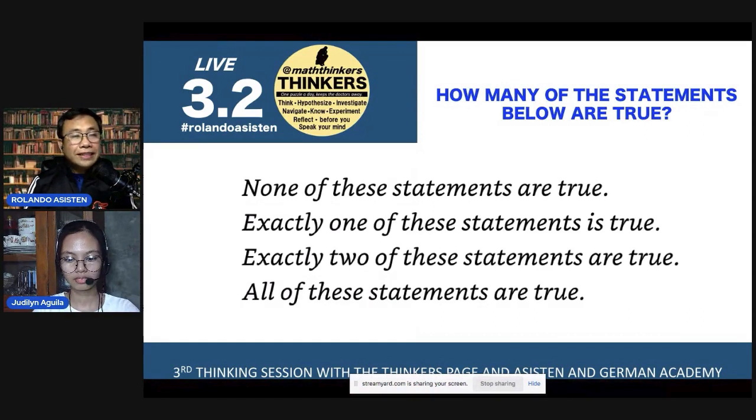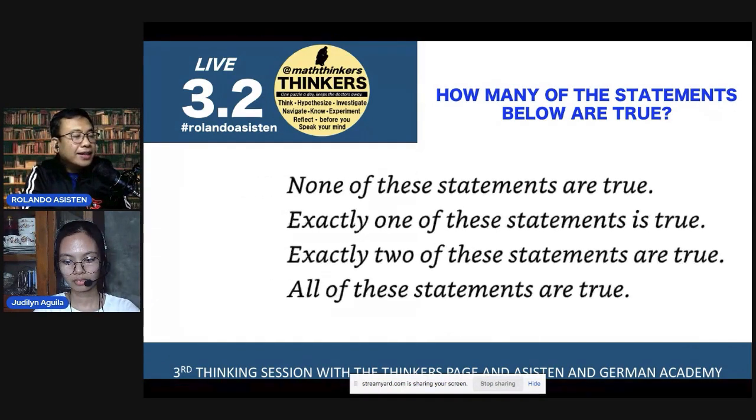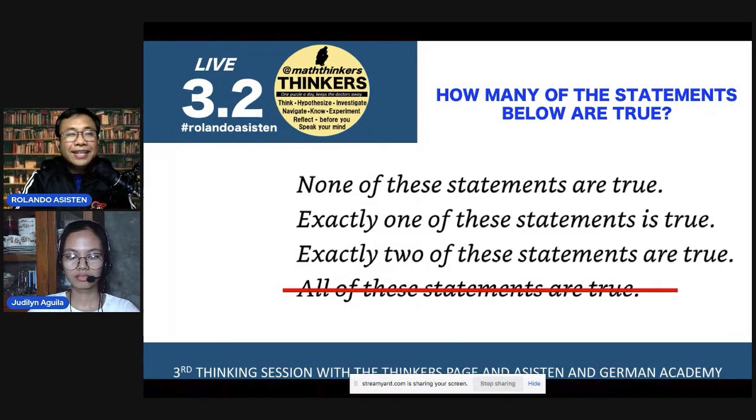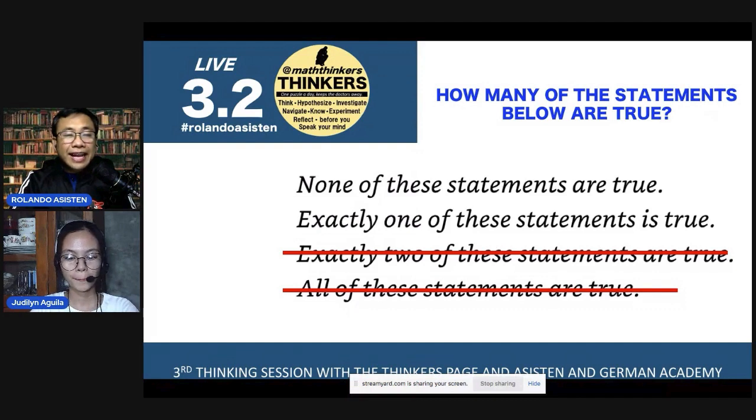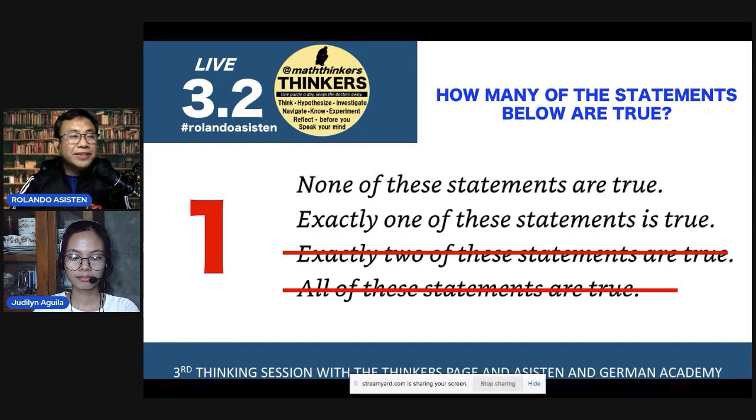So first, since these are all conflicting statements, then the last statement, all statements are true, must be wrong because not all of them can be true. We cannot say that none is true and exactly one is true and exactly two are true and still say that all the statements are true. So we can strike out the last statement. Now, which one can we still eliminate? Is it possible to say that none of the statements are true and at the same time, exactly one of these statements are true? That's impossible. So this statement, exactly two of the statements are true, cannot be also correct because you cannot have two correct statements here when the statements are all conflicting. So we can remove this part. Next, it's possible that none of the statements are true. And if none of the statements are true, then that means there's one statement that's true, that is, none of the statements is true. So that means if you follow the logic, there's only one possible answer here because if none of the statements is correct, that means that statement is correct. So there is one statement that must be true in this logic puzzle.